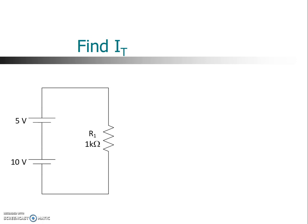In order to find the current through the resistor, we simply add up the voltages, 10 plus 15, and use Ohm's law to calculate the current. 15 divided by 1,000 ohms is 15 milliamps.